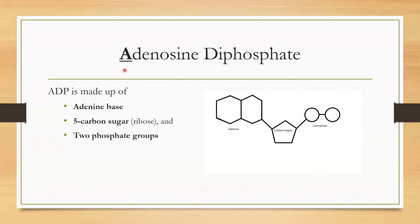We also have ADP, adenosine diphosphate. ADP is similar to ATP with the exception of the number of phosphate groups. With ADP, you still have your adenine base and the five-carbon sugar ribose, but you only have two phosphate groups — one, two. In the word, you can see the prefix 'di,' which equals two, to describe the number of phosphates in this molecule of ADP.